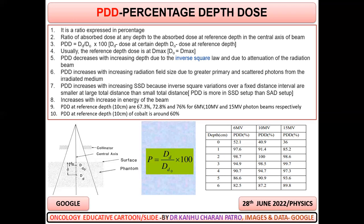PDD at the reference depth of 10 centimeters is usually 67% for 6 MV, 72% for 10 MV, and 76% for 15 MV.